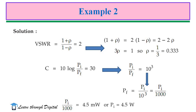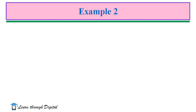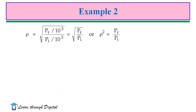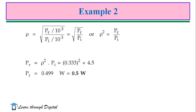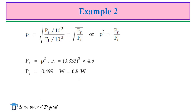From PF = PI / 1000, we calculate PI. Since PF = 4.5 mW, PI = 4.5 watts. Then, since rho = square root of (PR / PI), substituting the value of PI, we get PR = 0.5 watts. So if VSWR is given, from this we can find the reflected power.